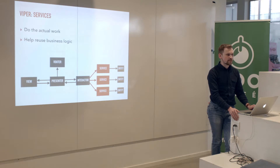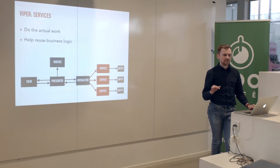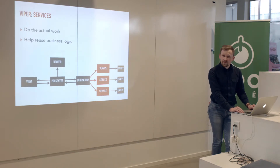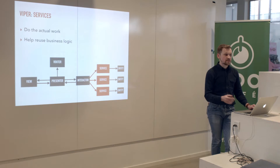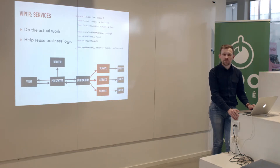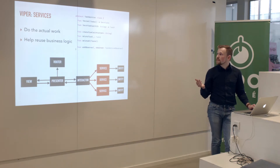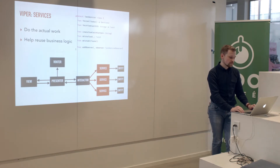One thing to consider: we have business logic in the interactor — for example, fetching tasks — but we might need to perform the same logic in some other place. So it makes sense not to keep it directly in the interactor but rather to move it into a Service. Services actually do the job of fetching tasks and are called by the interactor, which still handles business logic but now orchestrates the services rather than doing it directly. This lets us reuse services in other modules.